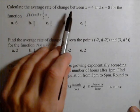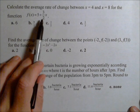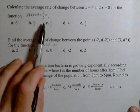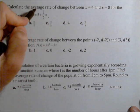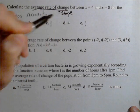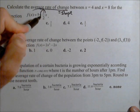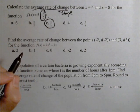For the first one, calculate the average rate of change between x=4 and x=8 for the function f(x) = 5 + (3/2)x. Now in this one, we have a linear function. So in a linear function, the average rate of change is the same thing as the slope. If we identify the slope, which is positive 3/2, we've got our average rate of change.